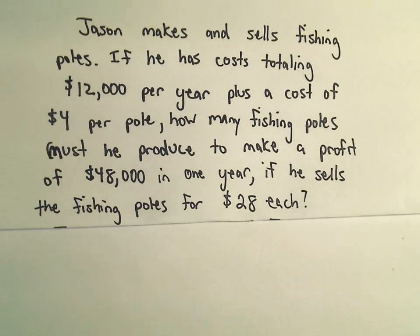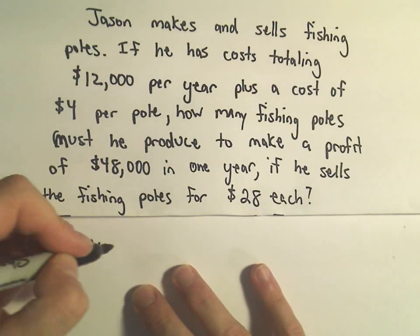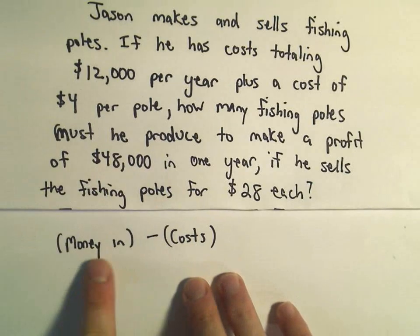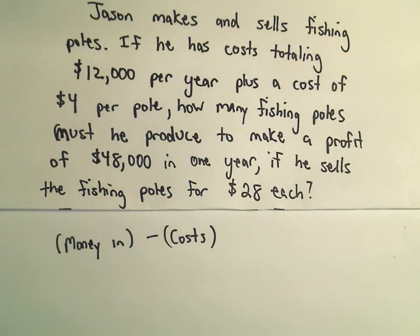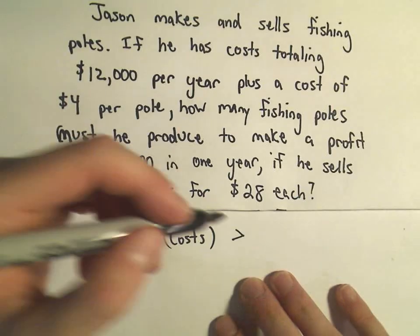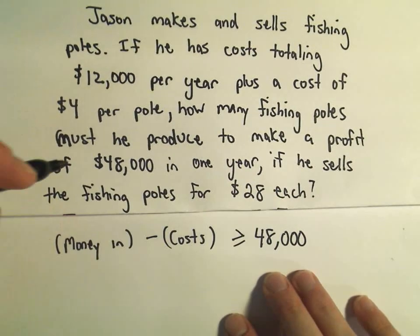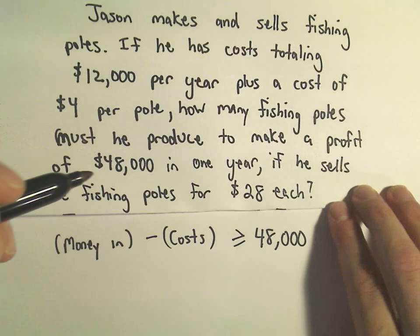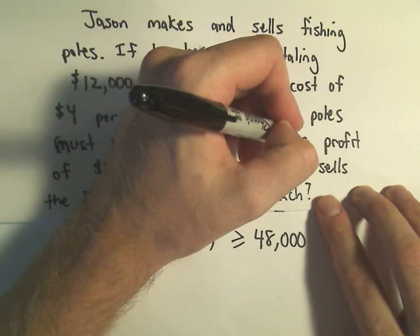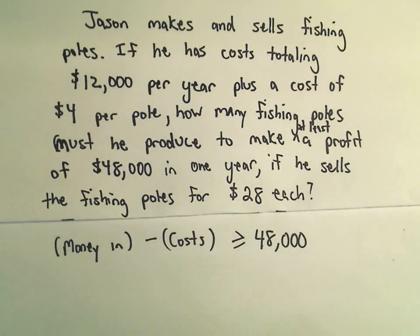To get started, intuitively what I'm thinking is: the money that he brings in minus his costs — whatever he's selling minus his costs — that's going to be his profit. That's how much money he gets to keep. We want that profit to be at least $48,000, because most people, once they hit some number and they're over that, they're happy.